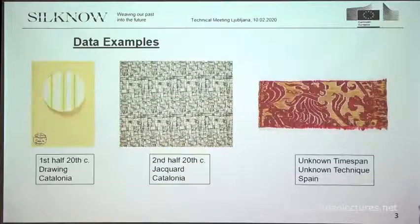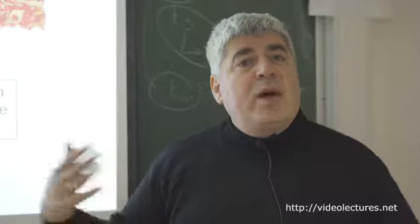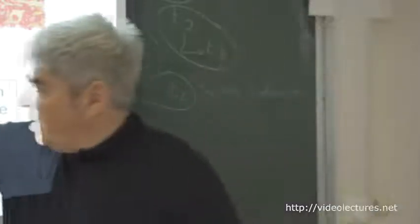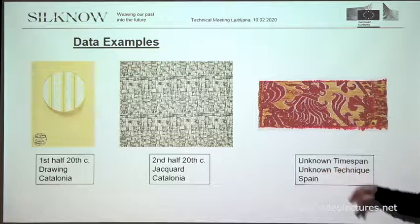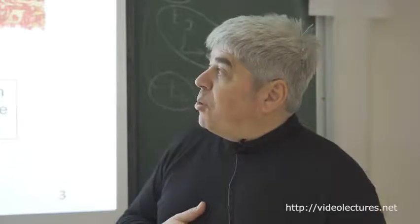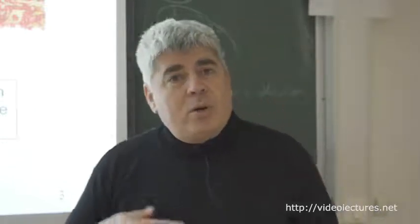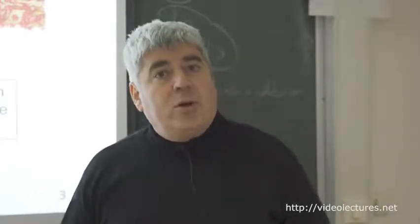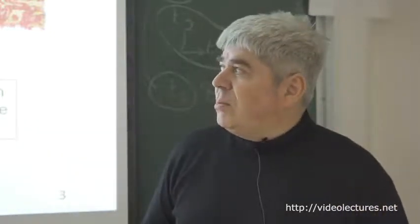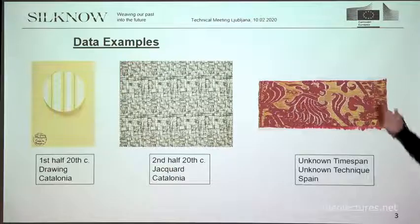So what we have is a set of images with known annotations. So for these images we know in this case the time, the place and the technique that were used to produce these fabrics. For some of these images we know all of this information. So we know the true values of all of these variables. The two right ones, the two left ones.